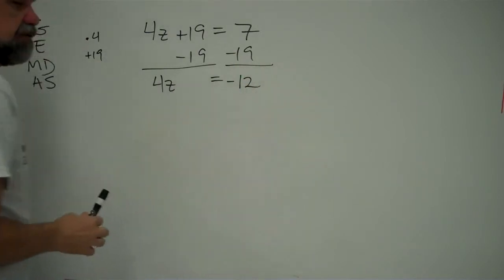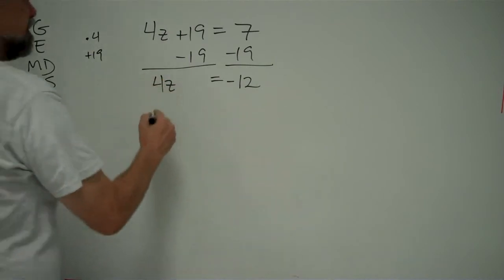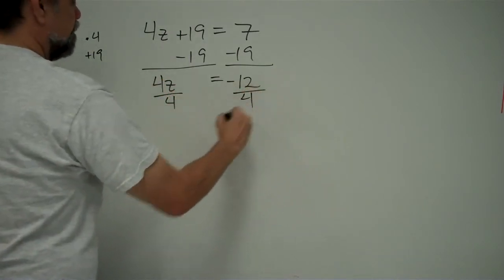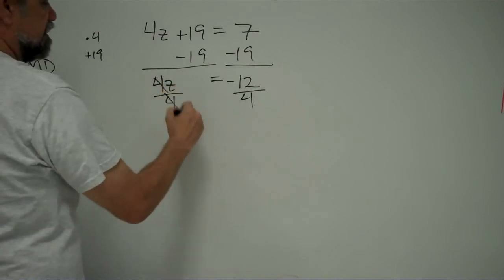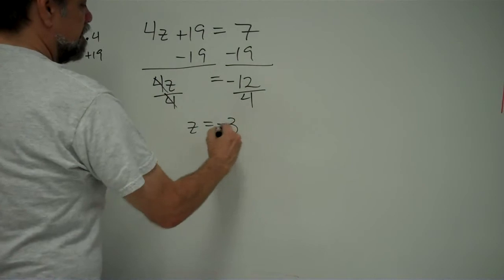4 times the number equals negative 12. So I've made this a little simpler problem now, and now it's just a one-step problem. It's times 4, so what do we do? We do the inverse operation. We divide by 4. And this gives us z equals negative 12 divided by 4, which is negative 3.